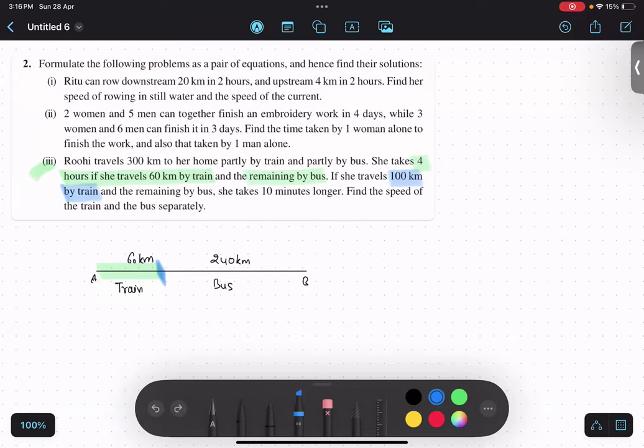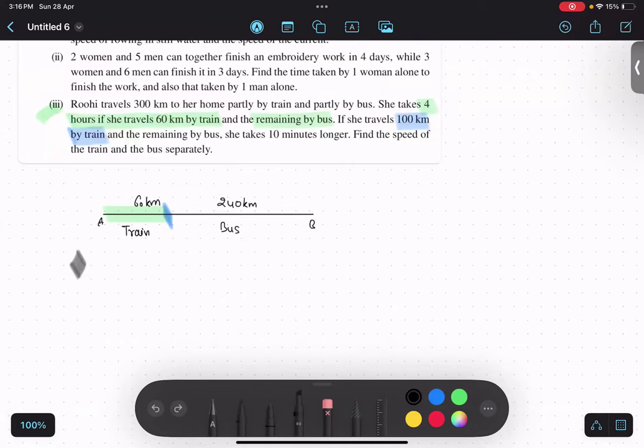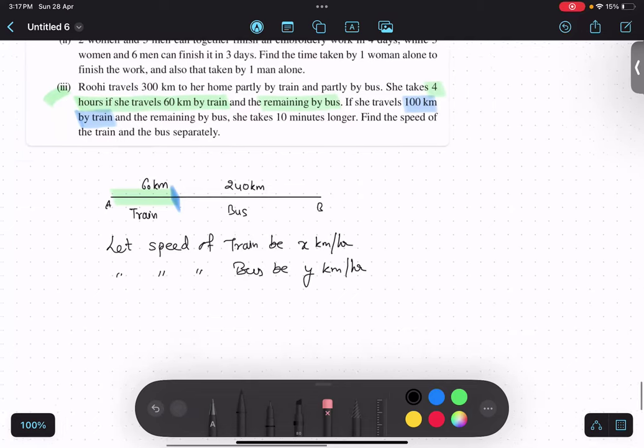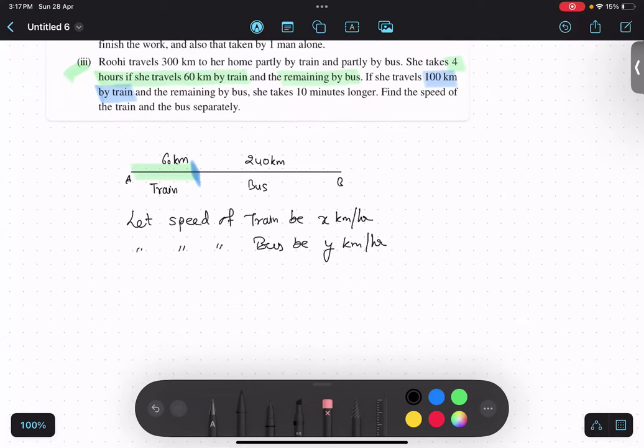Okay, so basically there are two cases over here, yes or no? Yes. So what do we need to find? Speed of train and the bus. So first thing we will do, let speed of train be x kilometer per hour and let speed of bus be y kilometer per hour. And we know that speed equals to distance upon time.